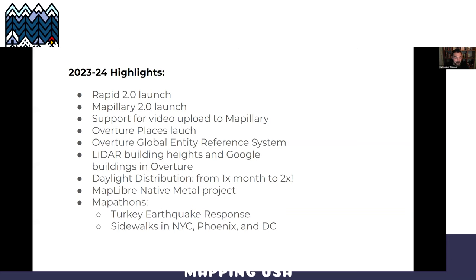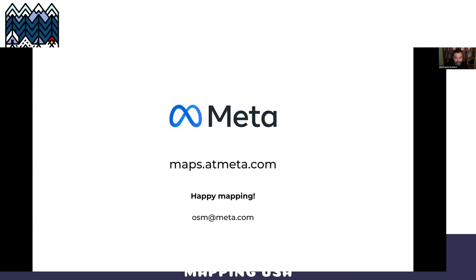Overall highlights: launching Rapid 2.0; the Mapillary app planning a 2.0 version, plus drag-and-drop video uploads from geotagged devices; Overture Places data launched; a global entity reference system — a universal ID system for Overture data — released, which is very helpful for matching sourcing when data goes into OpenStreetMap; LiDAR building heights; Google buildings shared as open data in Overture; the Daylight distribution going from once a month to twice a month releases; and MapLibre support and several mapathons. That sums up how we think about Maps at Meta. You can check out the website, or email us at osm@meta.com with questions or ideas.